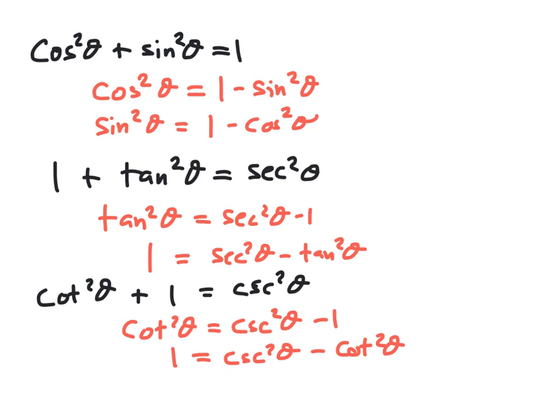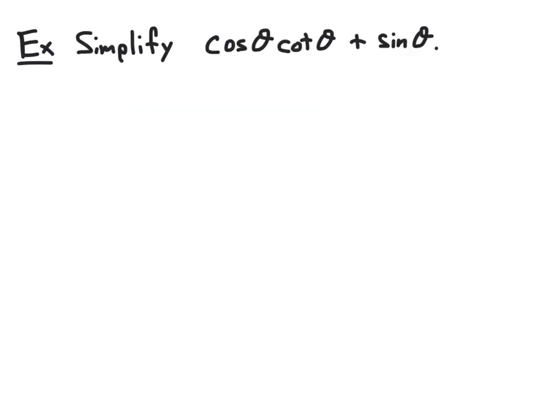Now that we've seen a list of all the identities we've talked about, as well as looked at how we can make variations of them, let's take a look at a few examples where we're asked to simplify trigonometric expressions. In this example, we want to simplify the expression cosine theta times cotangent theta plus sine theta. We want to take this expression and step-by-step apply trig identities or some algebra in order to come up with a single trig function or some basic expression involving just a single trig function.